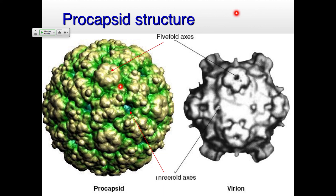The procapsid is bigger than the final capsid — you might not think you're going to make things larger before you get to the smaller one, but this gets back to the whole idea of a metastable state. It's got to be really stable on the outside but unstable when it finally gets to the place that it wants to be. Once you have the assembly of the nucleic acid on the inside, there's some kind of sensing where you then lose all of these external scaffolding proteins and finally form your native virion.